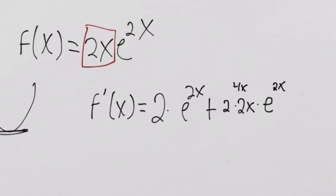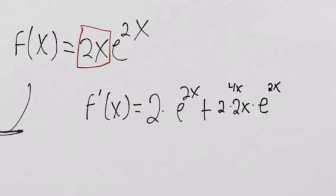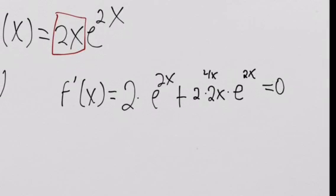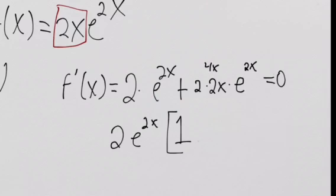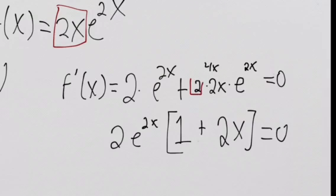So then this combines to 4x — 2 times 2x is 4x. Now we need to figure out when this is equal to 0, and this is a little bit tricky, but we can actually factor out a common factor, because there's 2e^(2x) in both terms. So if we factor out 2e^(2x), what's left over? Well, this is just 1 plus 2x, because if we take out 2e^(2x) from the second term, we're just left with 2x.